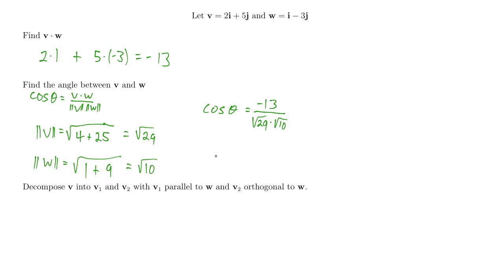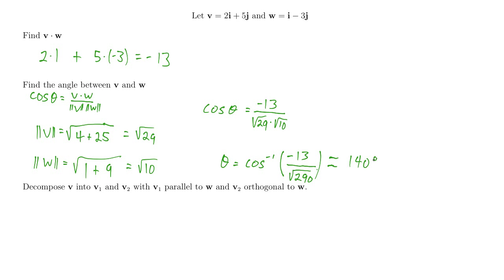That's what the cosine of the angle is, but I'm looking for the angle itself — what theta is. So theta will be the cosine inverse of that value: cosine inverse of negative 13 divided by — combining the square roots — the square root of 290. Plugging that into my calculator, this is approximately equal to 140 degrees. The angle between the two vectors is 140 degrees.